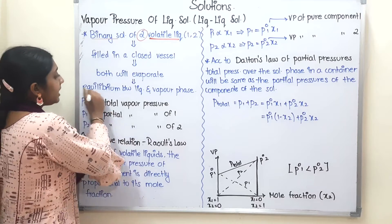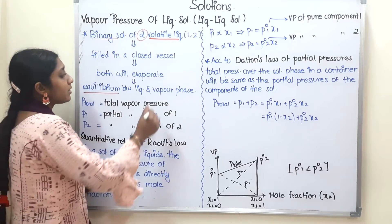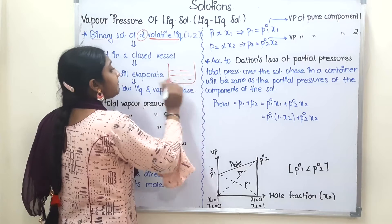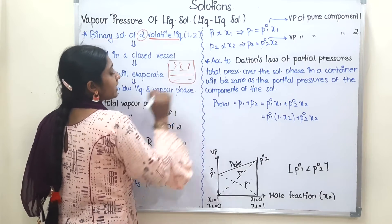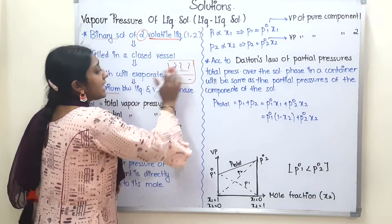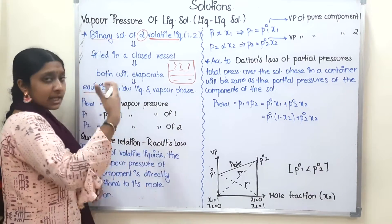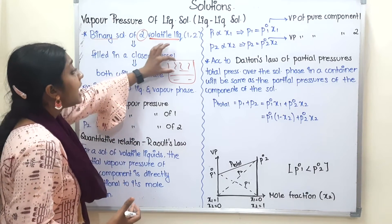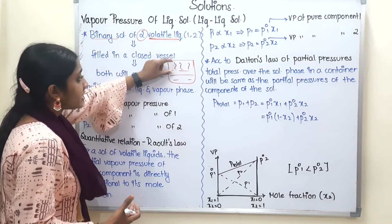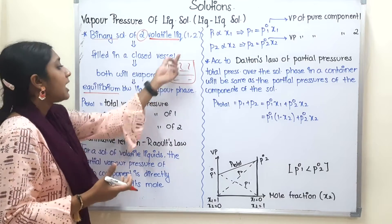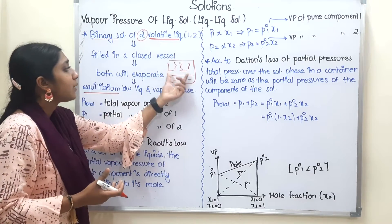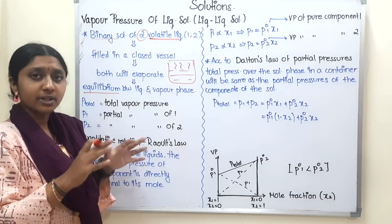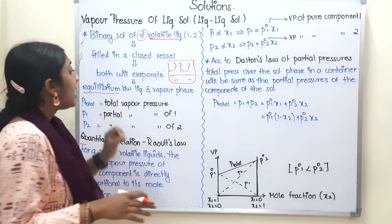The equilibrium will be reached. We will get a container with the two solutions. They evaporate, and at one particular time, equilibrium is reached — that is the vapor phase. When the rate of evaporation and condensation become equal, then evaporation stops.